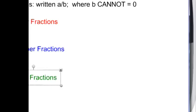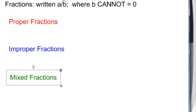This video is going to talk about simplifying fractions. Fractions can be written A over B, some number divided by another number, as long as B, the bottom number, is not equal to zero.